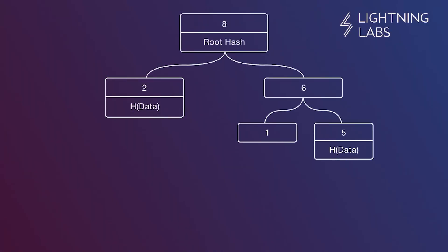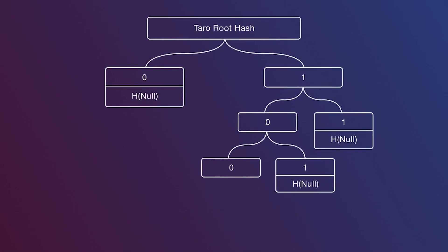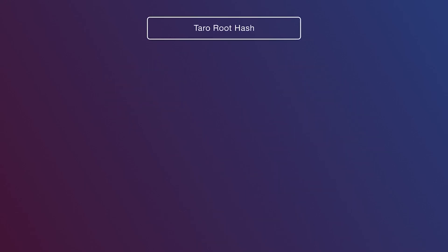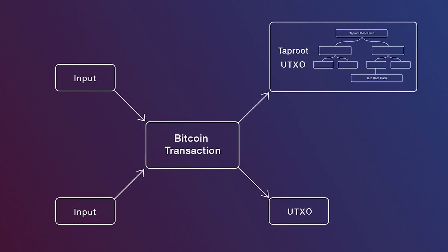A Merkle sum tree is a type of Merkle tree that contains numeric values at each leaf, and each node also carries the sum of the values below it, and at the root of the Merkle sum tree is the sum of all the values in the tree. This means we can use this root sum to efficiently verify that assets stored in this tree aren't being inflated, and easily show how many assets exist in total without having to reveal the entire tree. We put all that together to create a sparse Merkle sum tree, and then this Taro sparse Merkle sum tree root is put into a Taproot tree leaf, and using tap tweak, we can commit to the tree root in our transaction.